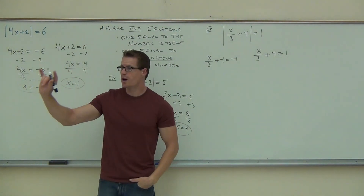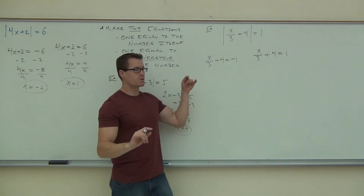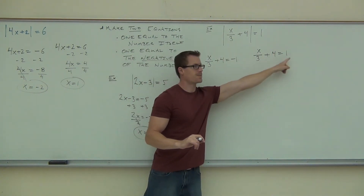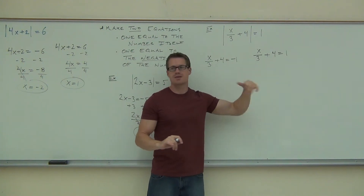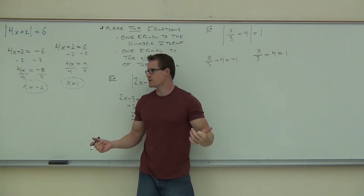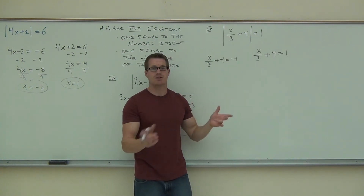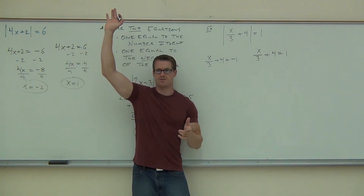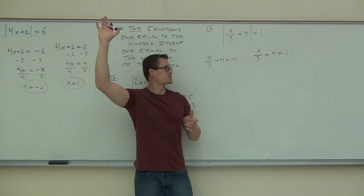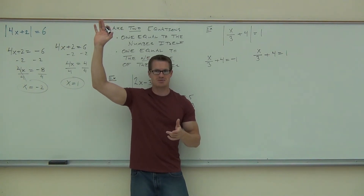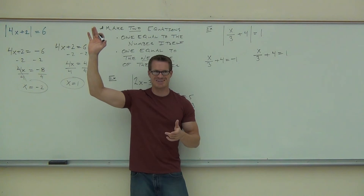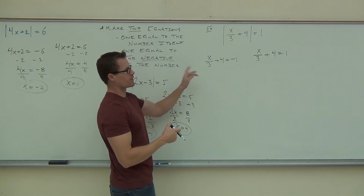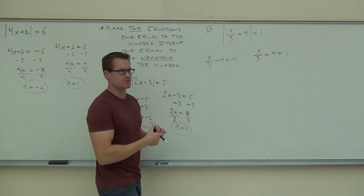How do we solve these? There are actually two options. You can multiply every single term by 3, using what we learned in Chapter 7 to get rid of denominators, or you could subtract 4 first and then multiply by 3. Either way works. How many people multiplied by 3 first? How many people subtracted 4 first? I hope nobody subtracted 3.